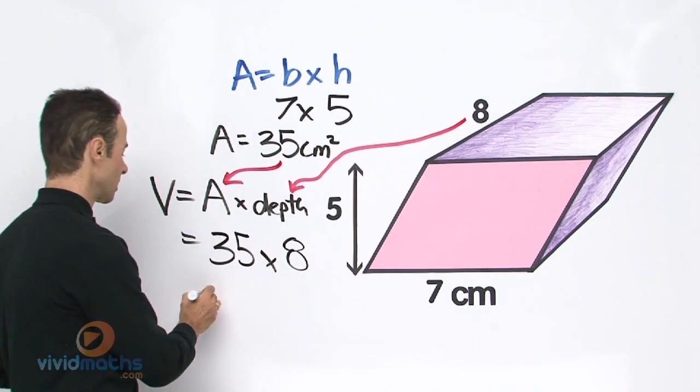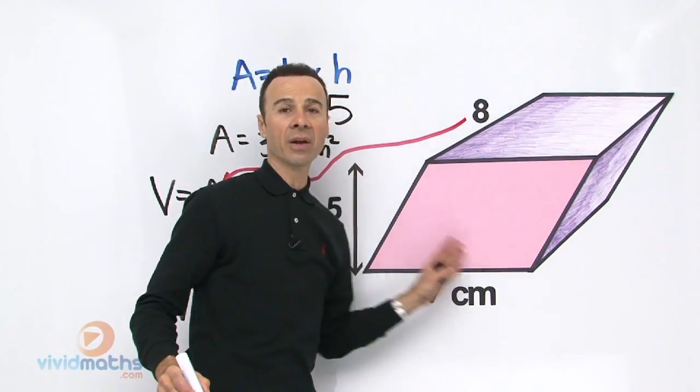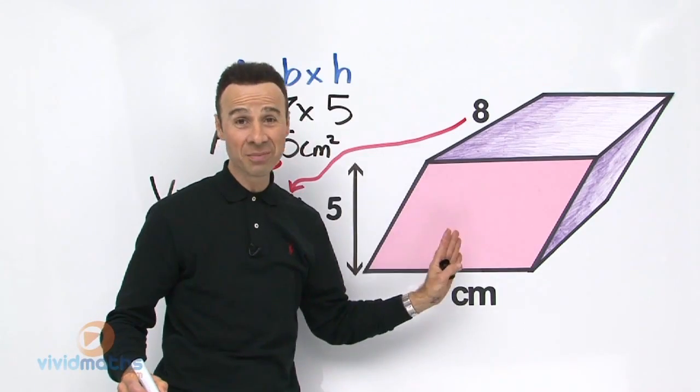So the volume of this total area here, which is called the parallel prism, all of that, the whole volume is all together.